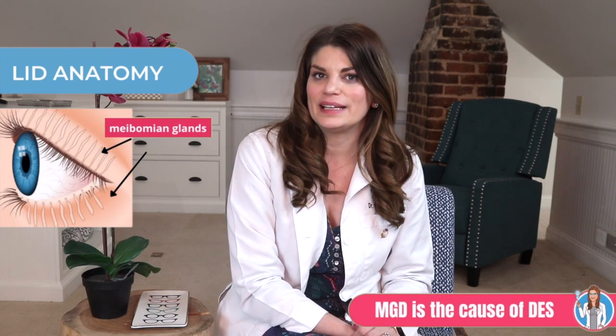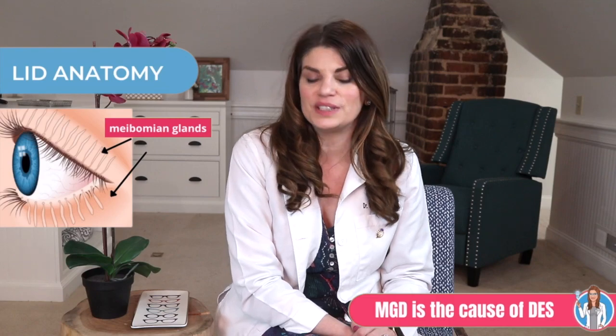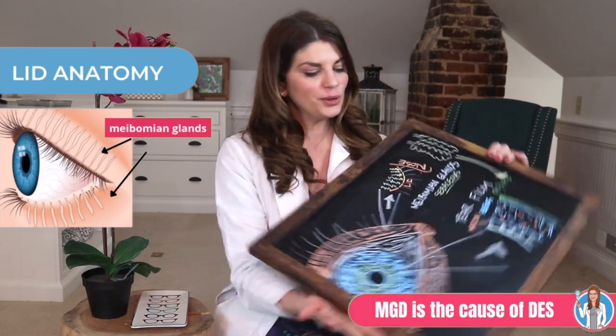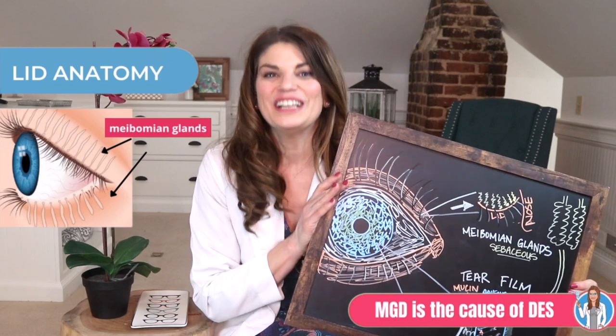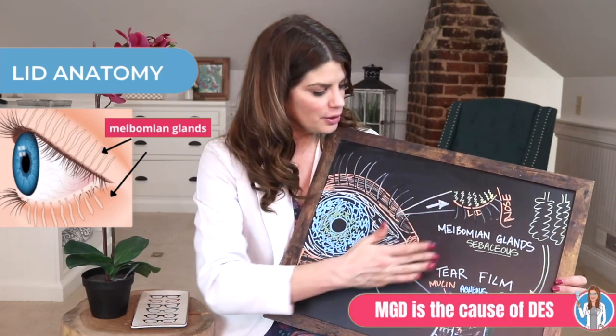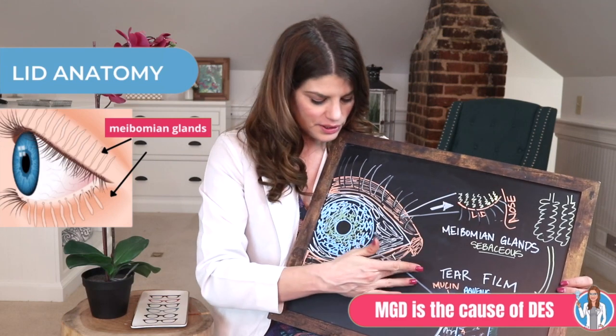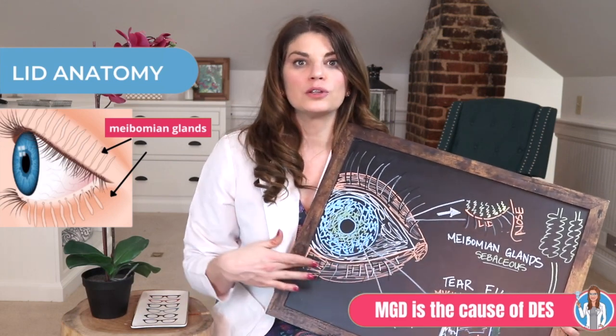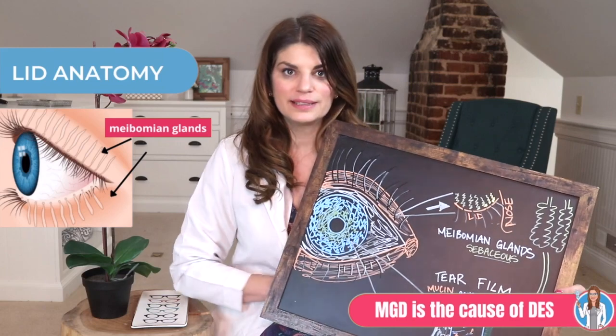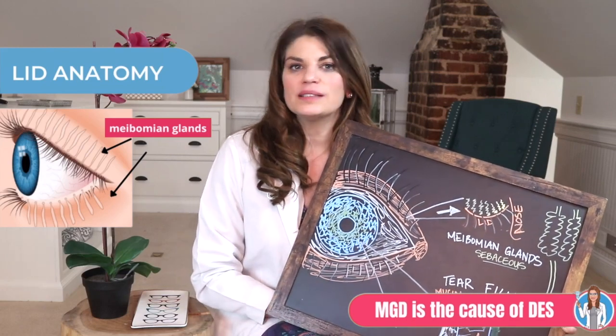The meibomian glands are sebaceous glands located all along both your upper and lower eyelid, and they play an important role in producing and protecting your tears. This drawing shows the meibomian glands located in the upper lid and lower lids — they're long, vertically-oriented glands. Their openings are located along what many people call the waterline or the edge of the eyelid. Although many of us believe our tears come from just the lacrimal gland and are simply water, that could not be further from the truth.